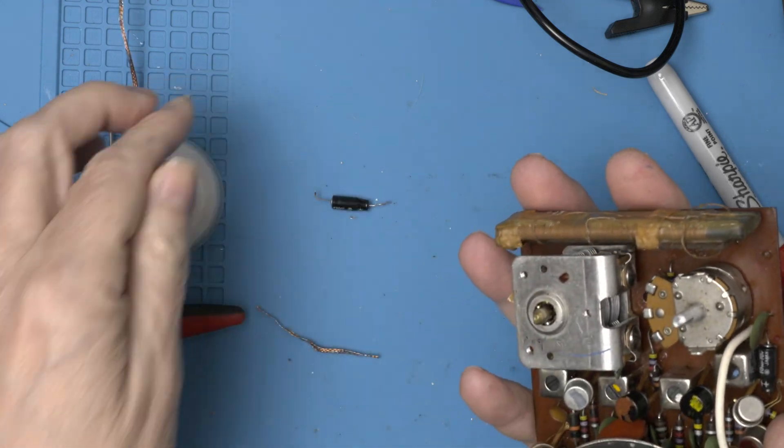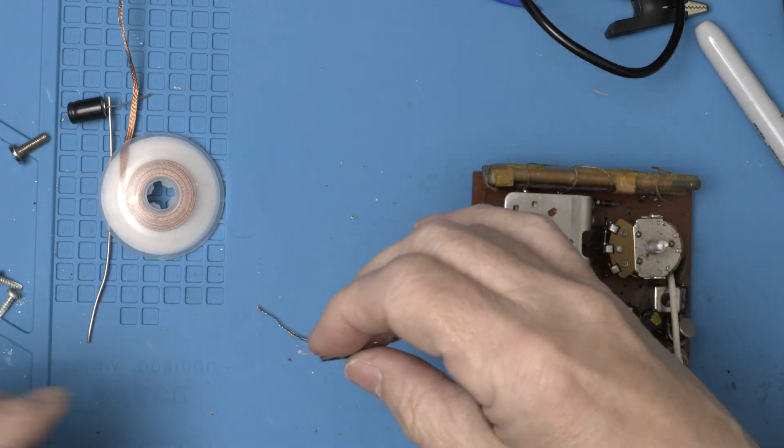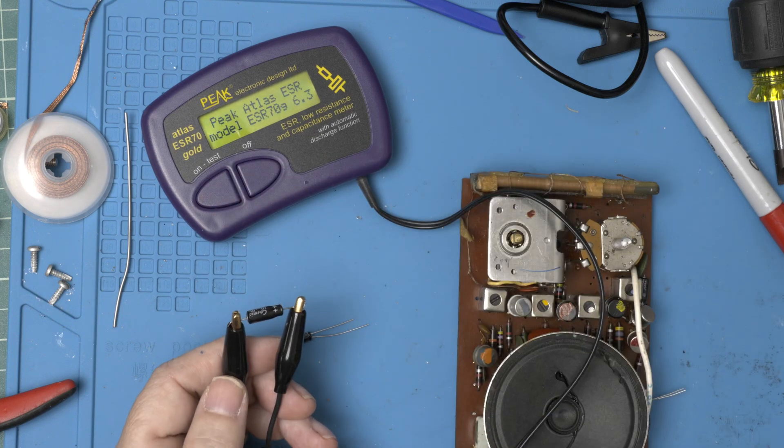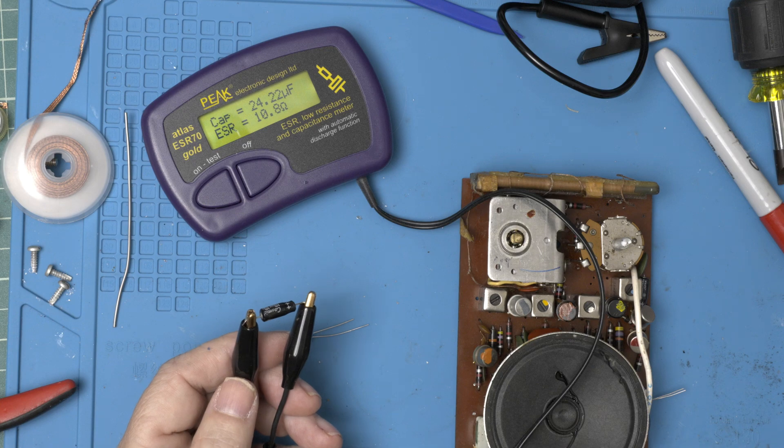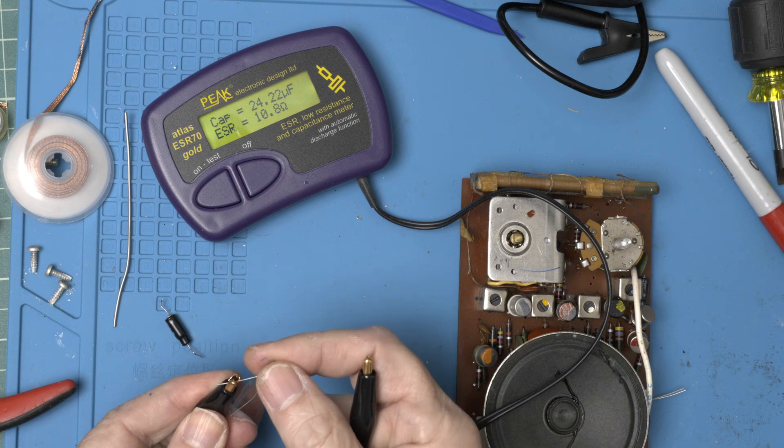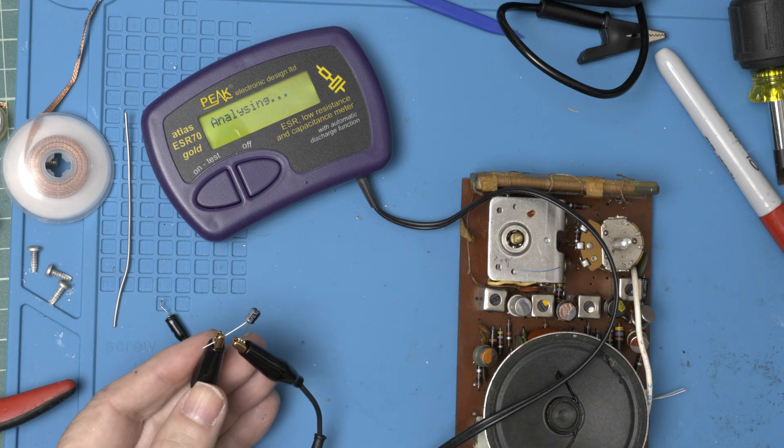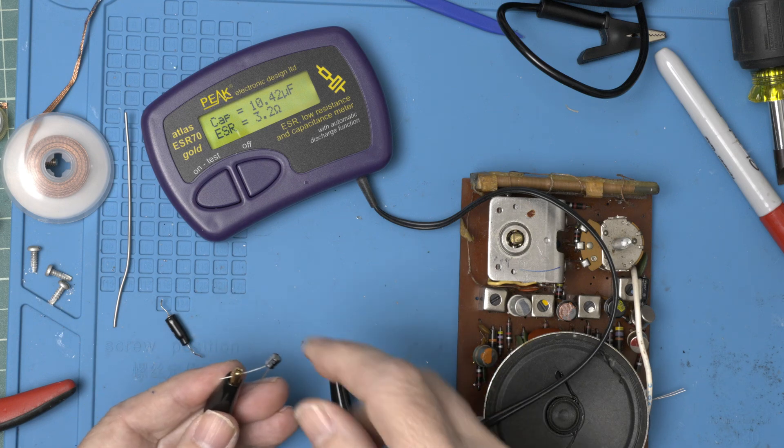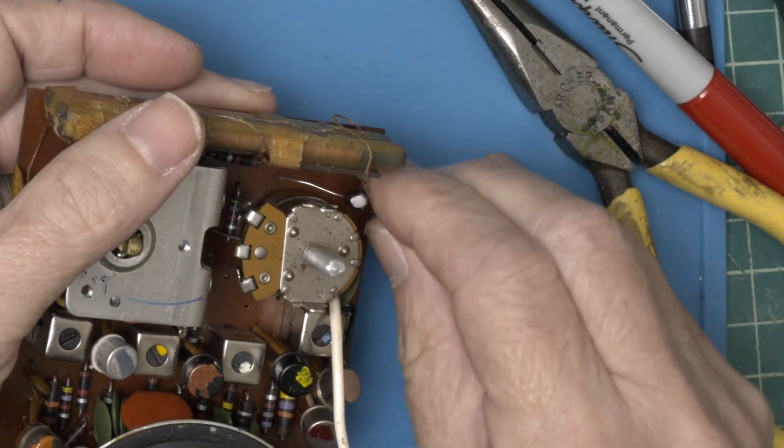Alrighty. Another one. This is a 10. And then, once again, let's compare what we just took out. So this 10 is a 24. The ESR of 10 is terrible. And what we're about to put in is 10 and ESR of 3.2. So much better.